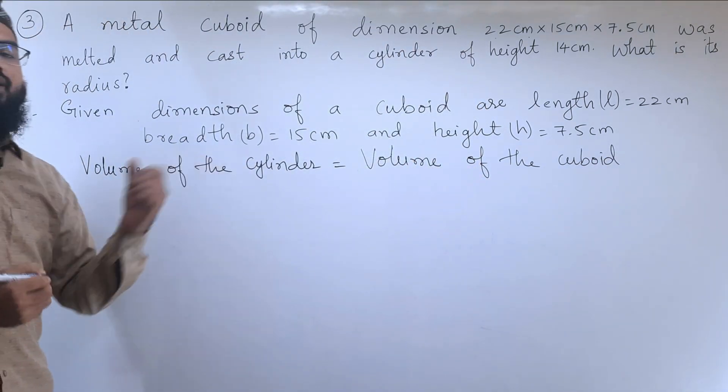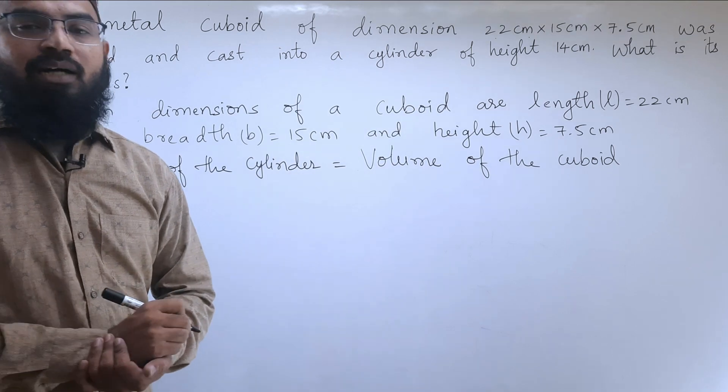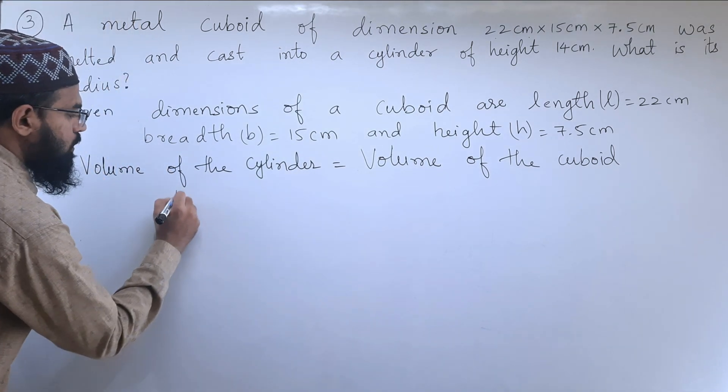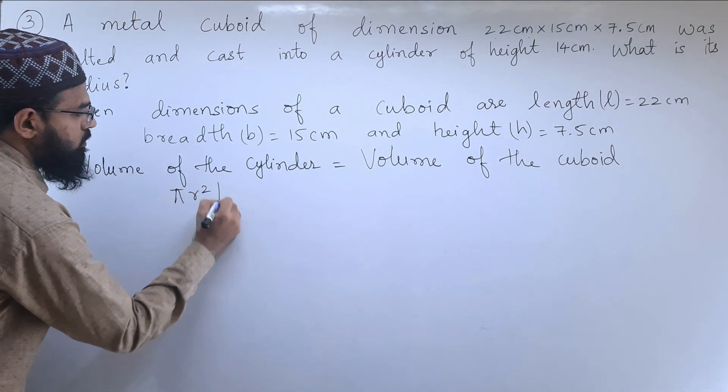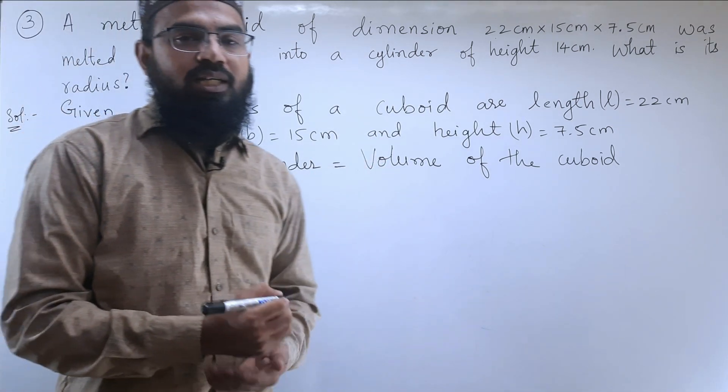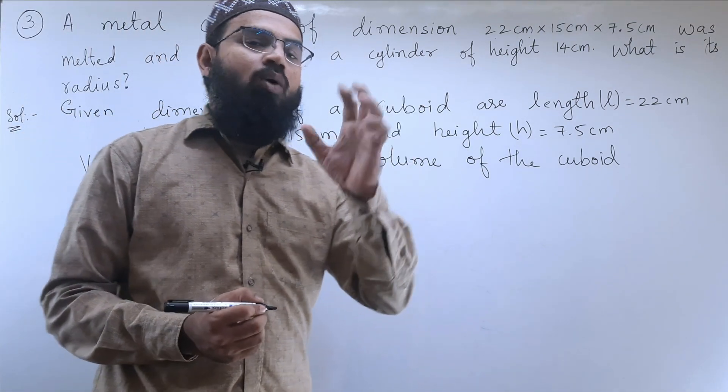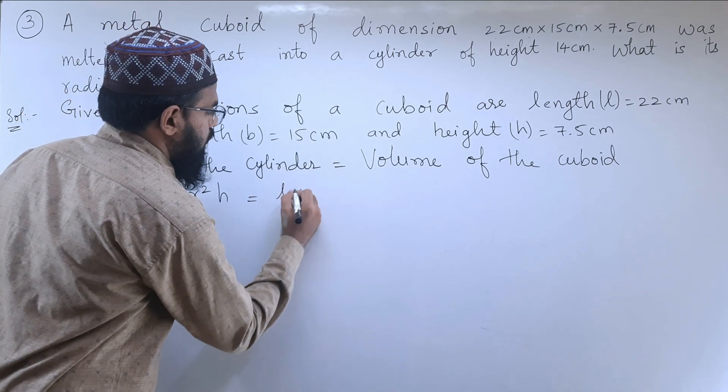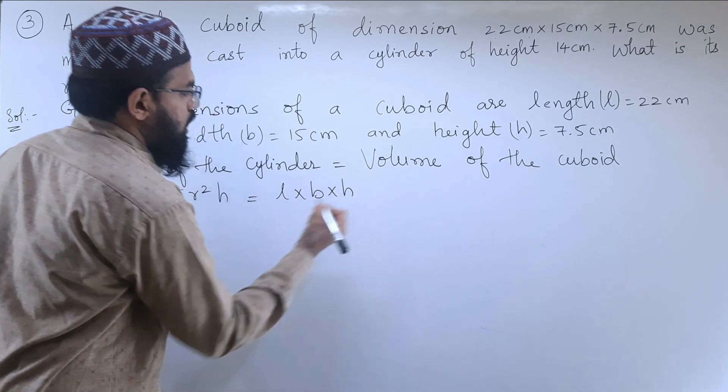Volume of the cylinder formula is π R² H, and the volume of the cuboid is length into breadth into height.